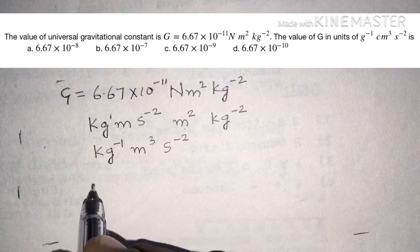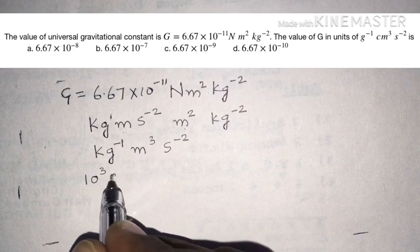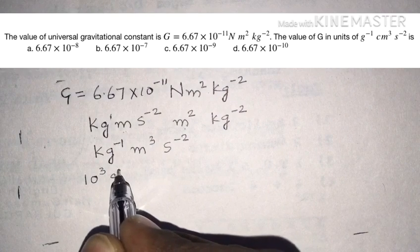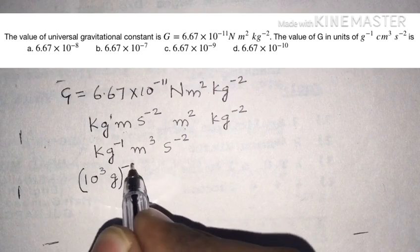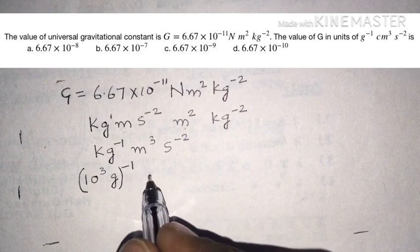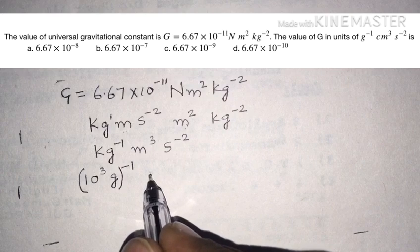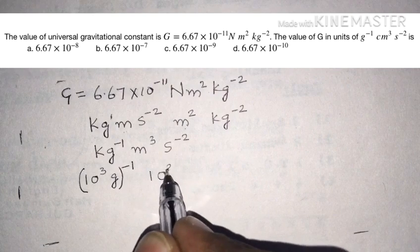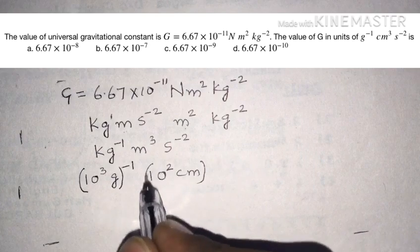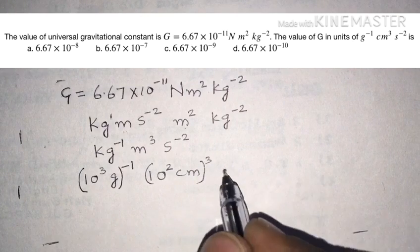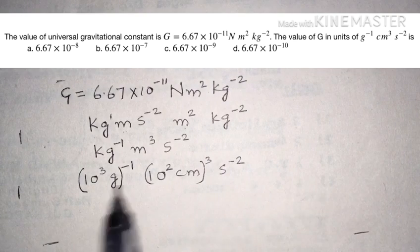Kilogram can be converted to grams as 10 power 3 grams, and since it appears as per kilogram, it is written to the power of minus 1. Similarly, meter can be converted to centimeters as 10 power 2 centimeters, to the power of 3. Seconds is a common unit and is kept as it is.